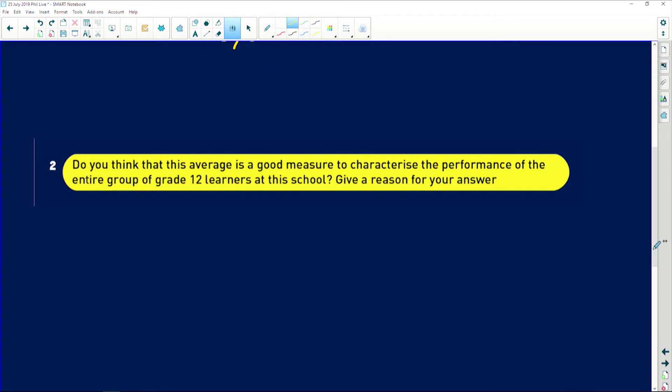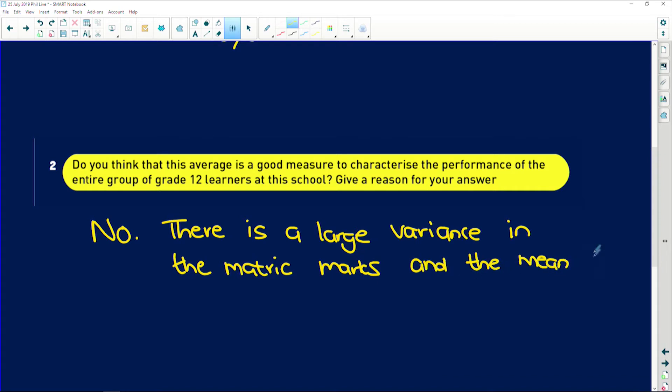So I would say that no, it is not a good measure. Why? Because there is a lot of variance, which means there is like a big difference between the different marks the matrics got. There is a large variance in the matric marks. And the mean, or you could say average, average gives no indication of the spread.